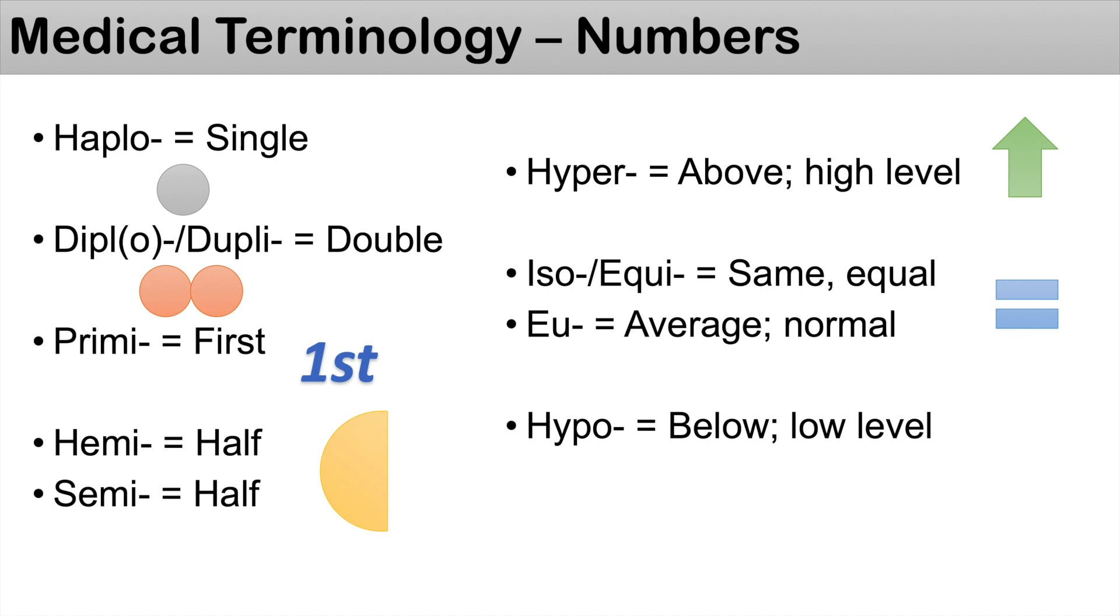And conversely, you can think of the prefix hypo, meaning below, or something that's low in amount. And similar to what we talked about before, hypotension is actually a low blood pressure.